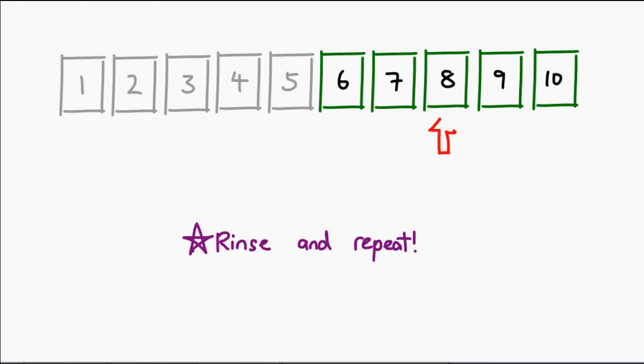So, 6, 7, 8, 9, 10, the middle value is 8. Now, 8 is obviously bigger than 6, and as a result, 8, 9, and 10 are discarded from the list.